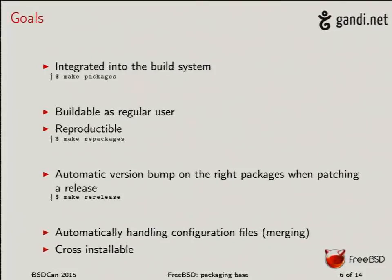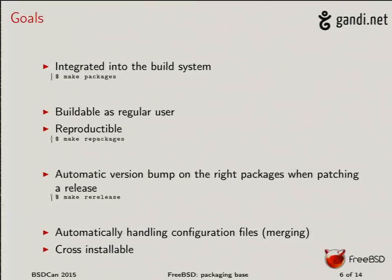The goal is to make it very simple for users to generate their own packages. We want a high-level target at the root of the source tree where the user just runs 'make packages.' It will do everything: build world, install into the staging area, create the packages, prepare everything, and put them somewhere you can push to your HTTP server. We want you to be able to build as a regular user — you don't need to be root. Root can still use those packages, but a regular user can just check out the tree, run 'make packages,' and install them anywhere.